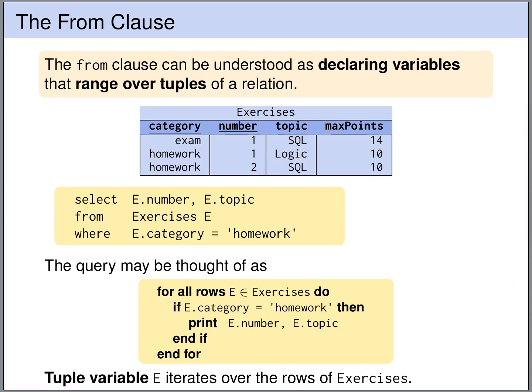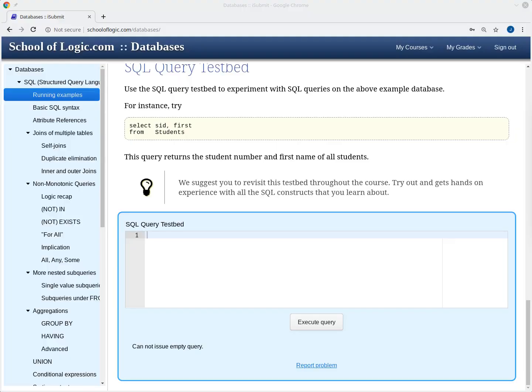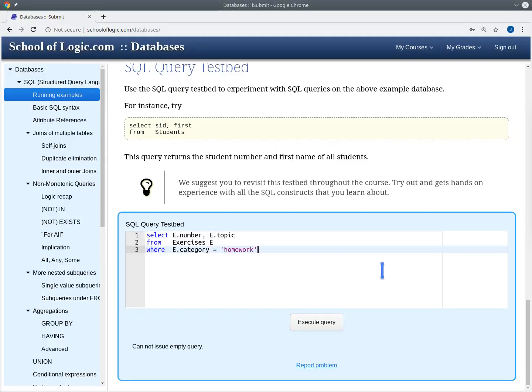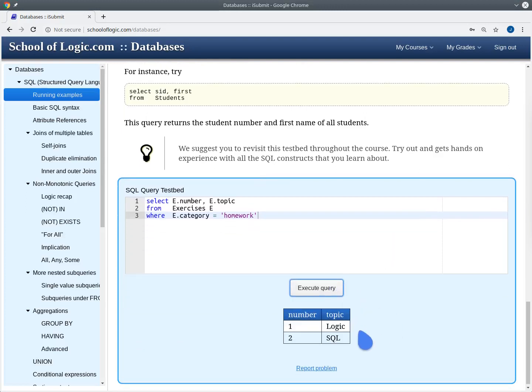At any point if you want to try out a query that you see on the slides, you simply copy the query. Then you paste the query into the online system and say EXECUTE QUERY. And you immediately see the result. We have a table with two columns, number and topic. And we have two rows, one with number 1 and topic logic, one with number 2 and topic SQL.